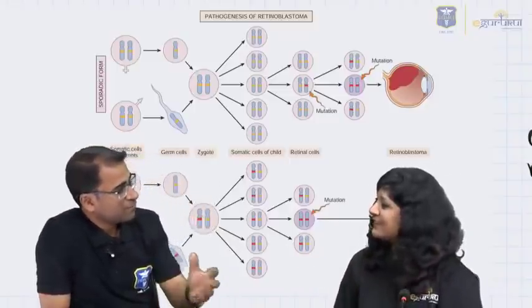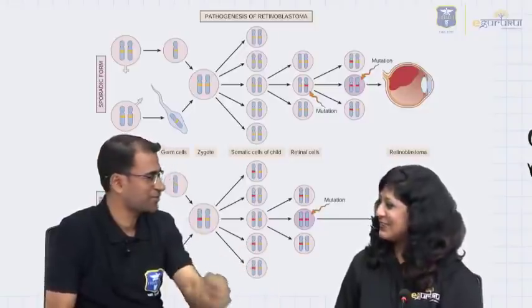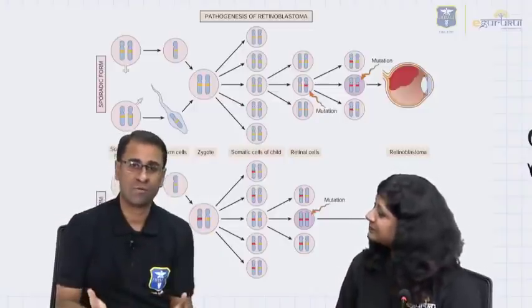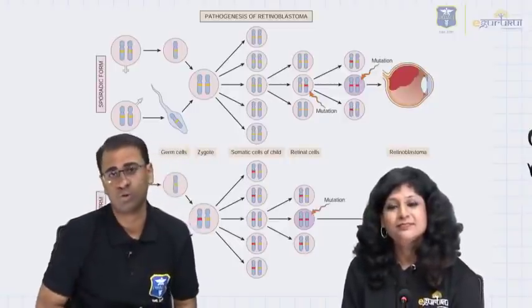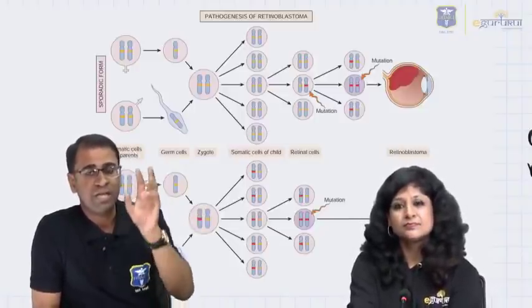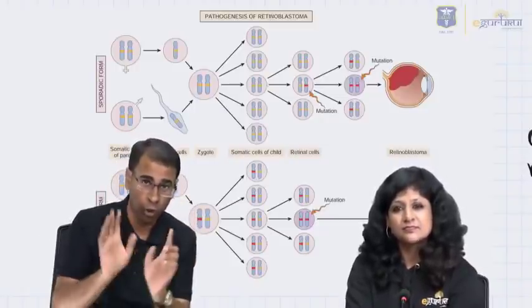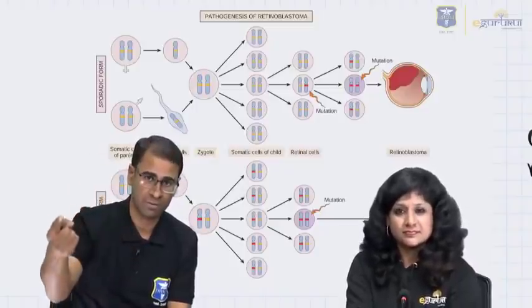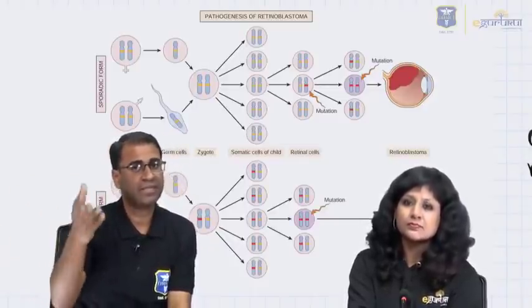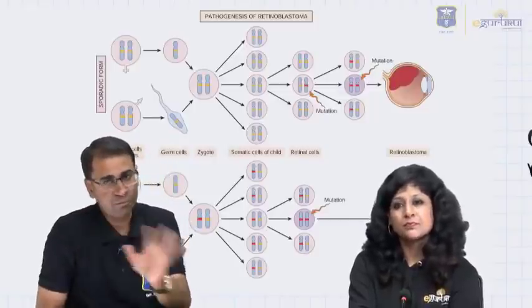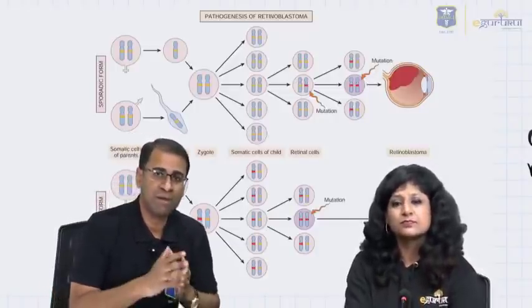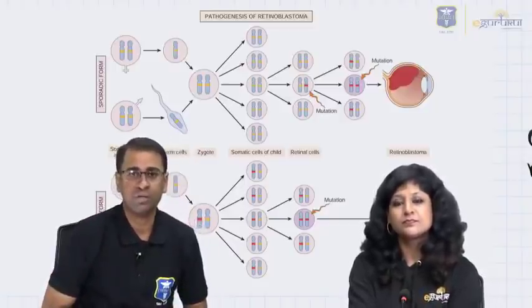That is the reason we call it autosomal dominant inheritance. Students often ask: the tumor is occurring in a homozygous form because both alleles are mutated — so why do we call this autosomal dominant? The reason is the second mutation occurs only in the retinal cells, not in the entire body. This is a very important point that could be asked in USMLE. In the sporadic form, both alleles are normal at birth; both mutations occur after birth. In the familial form, one mutation occurs at the zygote stage, the second occurs during lifetime.